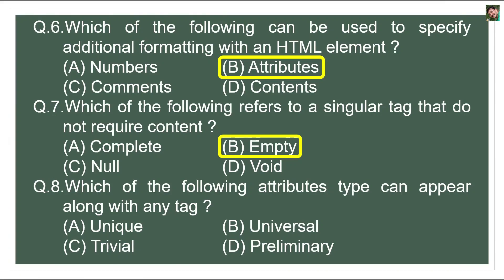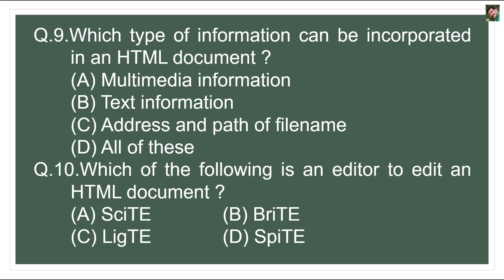Question 8: Which of the following attribute type can appear along with any tag? There are certain attributes that can appear with any tag, and such attributes are called universal attributes.